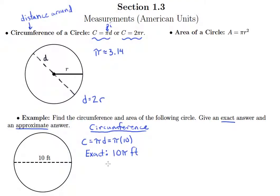So if a question asks you to give the exact answer, then you'd leave pi as this symbol. You don't use 3.14, you just leave it as pi and say 10 pi feet.